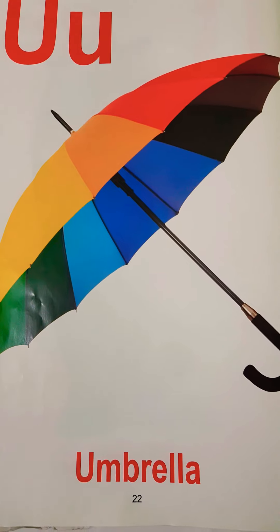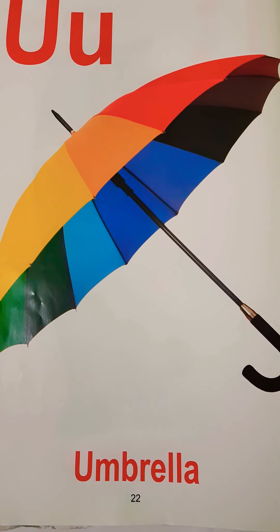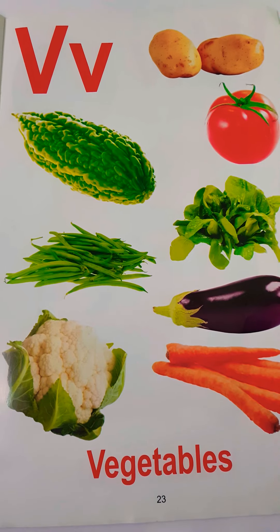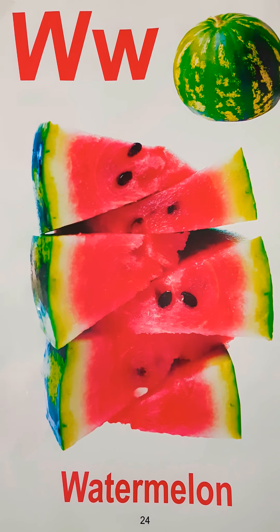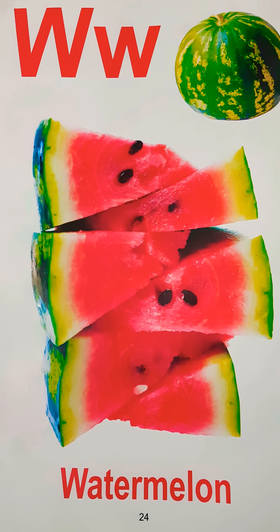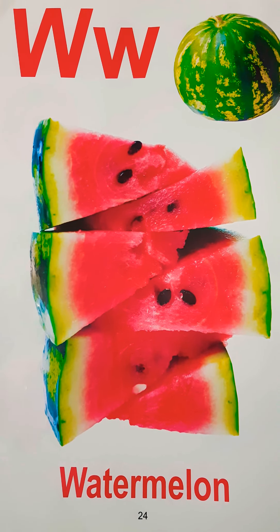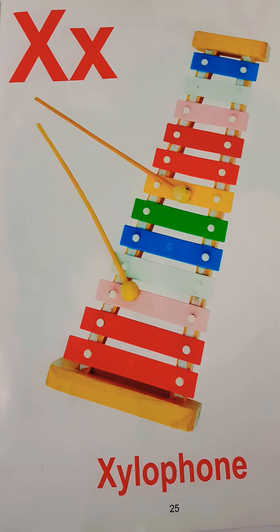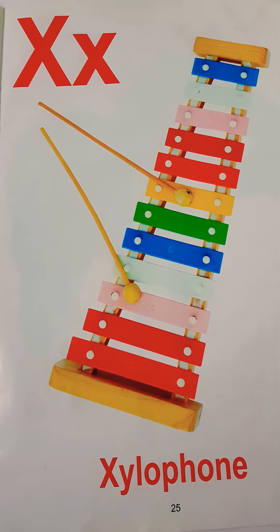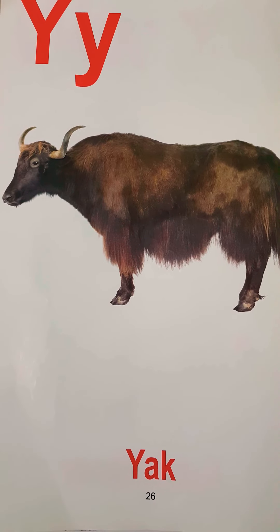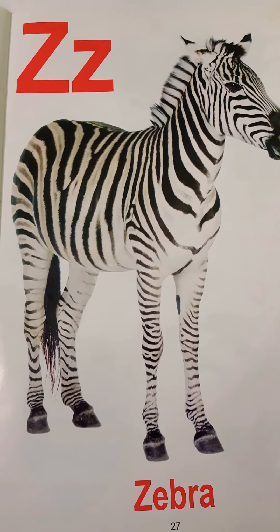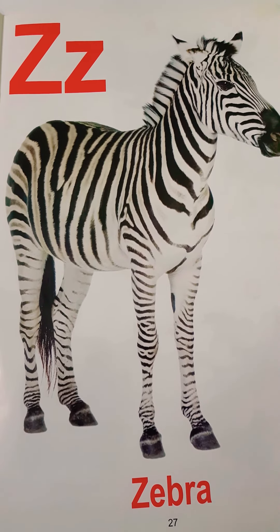T for tiger, U for umbrella, V for vegetable, W for watermelon, X for cider, Y for young, Z for zebra.